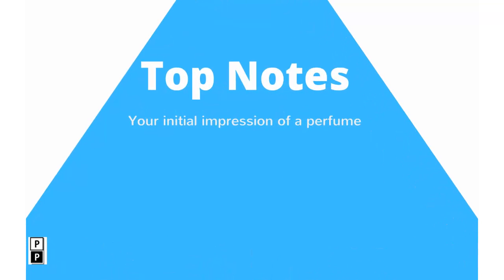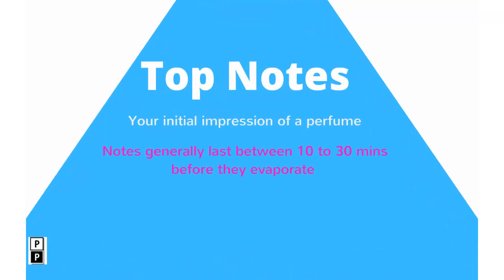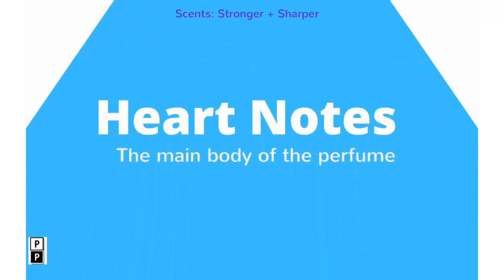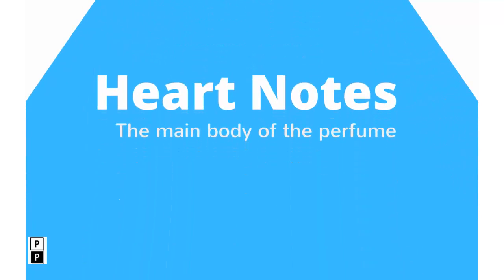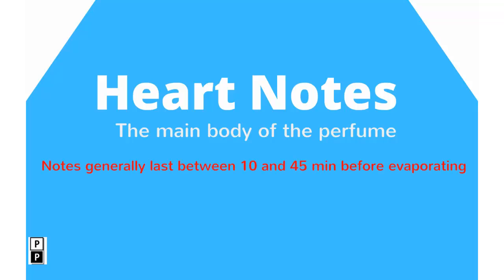Top notes generally last between 10 and 30 minutes before they evaporate, and they are generally characterised by strong, sharp scents. Once those notes have gone, the perfume opens up to the heart notes, which represent the true essence of a perfume. These notes can last anywhere between 10 to 45 minutes, with the scent transforming into a more mellow and rounded fragrance.